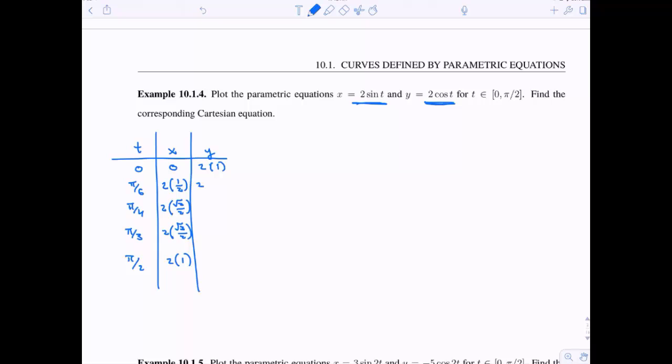And then for my y values, when I plug in 0 into cosine, I get 1. So 2 times 1. When I plug in pi over 6, pi over 4, pi over 3, and pi over 2. So again, I'm just using the point plotting method here, plugging in different values for my parameter t.